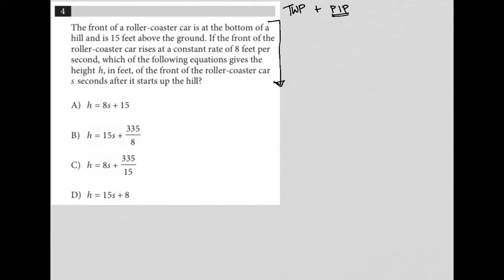So let's just make sure I understand this. So we're at the bottom of a hill. So I have a hill. Let's go like that. So let's say I'm right here. Let's go back this way. So say I'm here. That's the roller coaster car at the bottom of the hill. It is 15 feet above the ground.